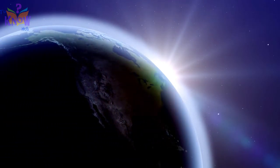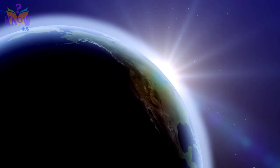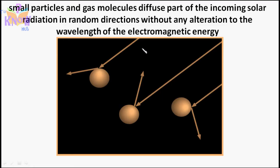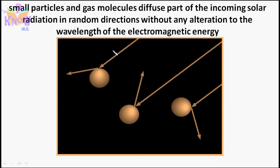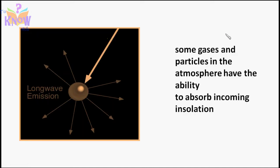Three things happen to solar radiation. First is scattering. The process of scattering occurs when small particles or gas molecules diffuse part of incoming solar radiation in random directions — they absorb the solar radiation, start vibrating, and release the wave in every direction, scattering it. Only a small portion of this scattered energy actually reaches the earth.